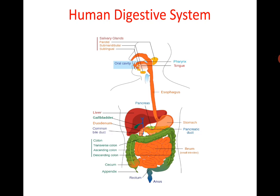After the mouth and pharynx, the next part of the digestive system is the esophagus. The esophagus is a thin muscular tube behind the trachea, about 25 cm long, passing through the neck and ribcage, piercing the diaphragm, and joining the stomach. It is lined by mucus cells which lubricate the passage of food. Longitudinal and circular muscles form the esophagus wall, creating rhythmic waves of contraction and relaxation called peristalsis.